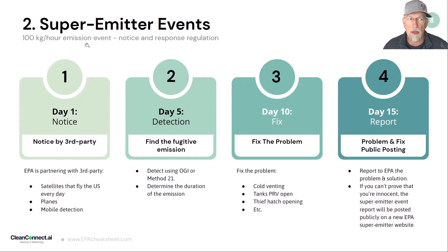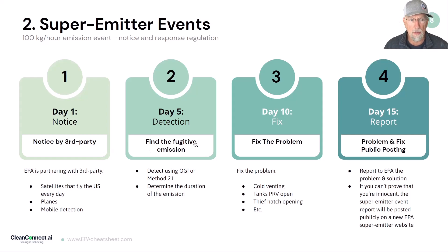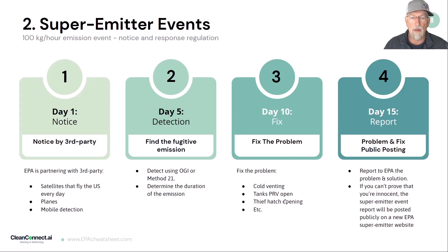A super emitter event is when there's a 100 kilogram per hour emission event. You could get notice from a third party — it could be a satellite, a plane, or mobile detection. By day five, you are supposed to determine the root cause using OGI or Method 21. By day 10, you must fix the problem. They list three common anticipated problems: cold venting tanks, pressure relief valve opening, and thief shaft opening. By day 15, you have to report back to the EPA the problem and the solution. If you can't prove the event wasn't you, it will be listed on their new super emitter website.